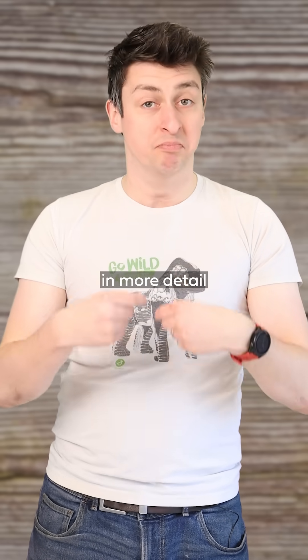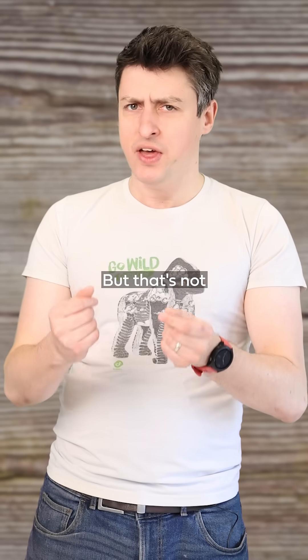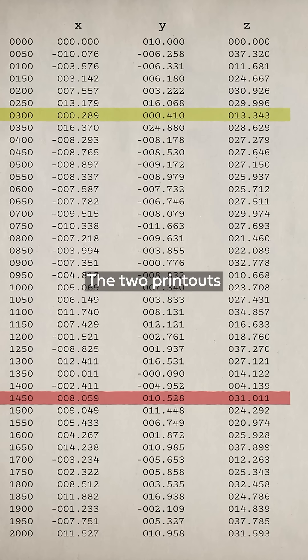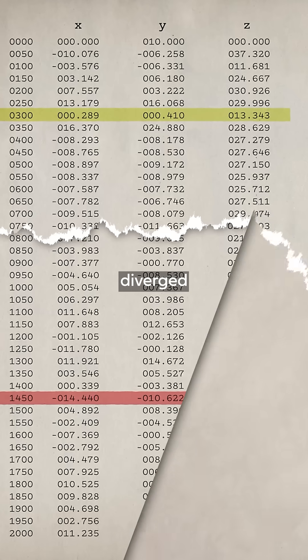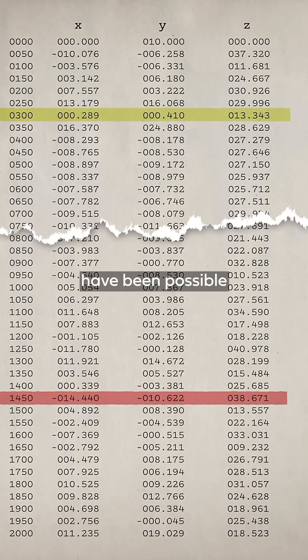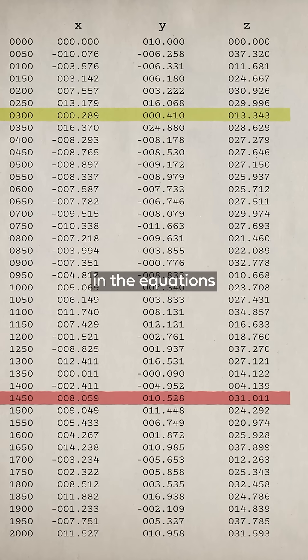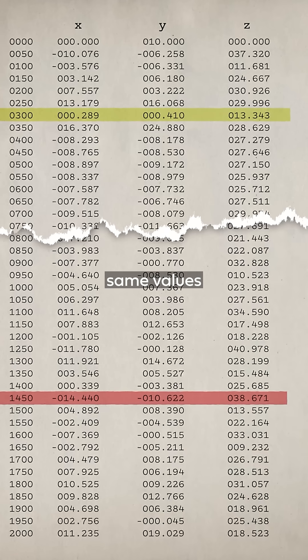He came back and expected to see the same results as previously, just in more detail. But that's not what happened. The two printouts looked the same to begin with, but rapidly diverged. And this shouldn't have been possible. There was no randomness in the equations. If you start with the same values, you should get the same results every time.